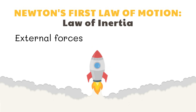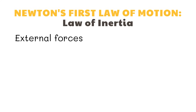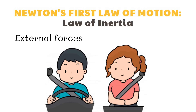Let us look at examples of external forces. Imagine a spacecraft in space — when the engines are turned off, the spacecraft will move with constant speed in the same direction. However, when the spacecraft's engine is turned on, it will experience an unbalanced force that changes its speed and direction. Similarly, imagine you are riding a car and it experiences a sudden stop. Inertia will keep you moving forward. You will stop only when you hit another object such as the steering wheel or windows, causing severe injury. Seat belts prevent this by acting as an external force that stops you from moving forward.